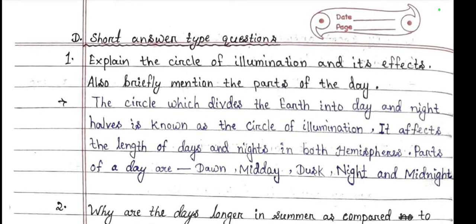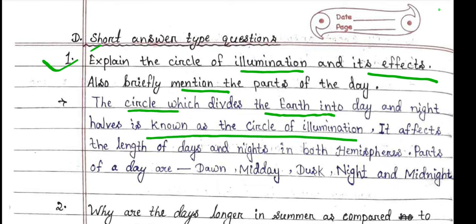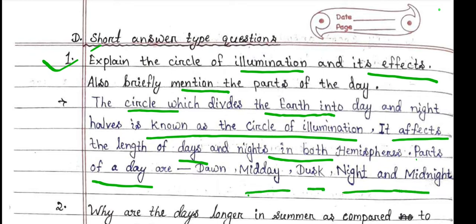Next, short answer type questions. Explain the circle of illumination and its effect, and briefly mention the parts of the day. The circle which divides the Earth into day and night halves is known as the circle of illumination. It affects the length of days and nights in both hemispheres. The parts of a day are dawn, midday, dusk, night, and midnight.